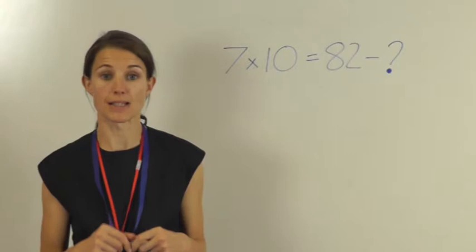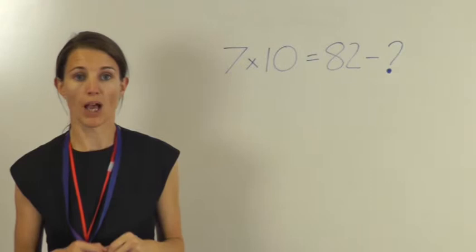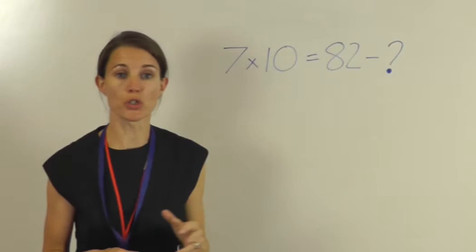This is question 12 of your level 3 basic skills sheet. Your question might look something like this. In this question, what we're trying to do is find the missing number, and that's been written as a question mark here.